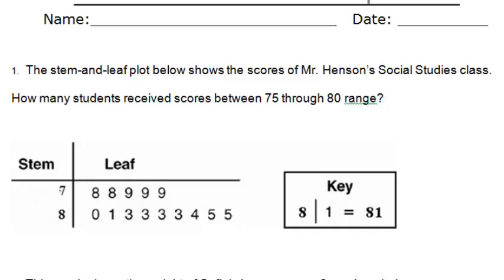So you have 1, 2, 3, 4, 5, and then you have 80 over here, which makes 6. So you have a total of 6 numbers that fall between 75 and 80.